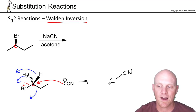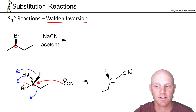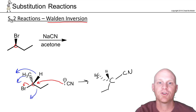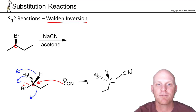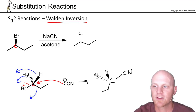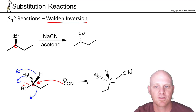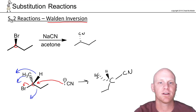As the cyano group attacks from the left, 180 degrees opposite the bromine, all three other groups flip to the left. The ethyl group moves from right to left, the hydrogen moves from right to left but stays a wedge, and the methyl group also flips. Alternatively, we can show this by keeping methyl and ethyl in place and switching the cyano group to a dashed bond.